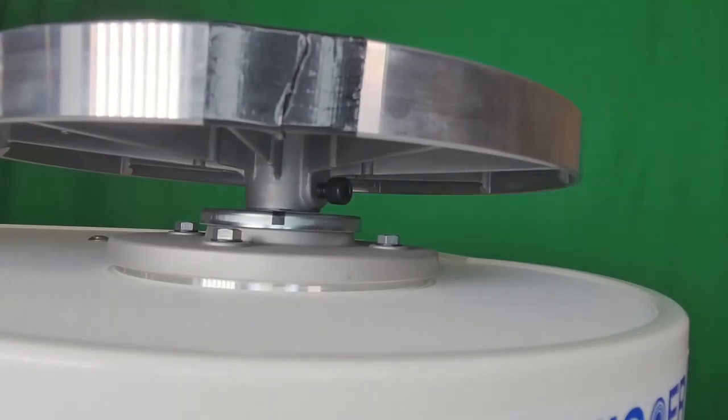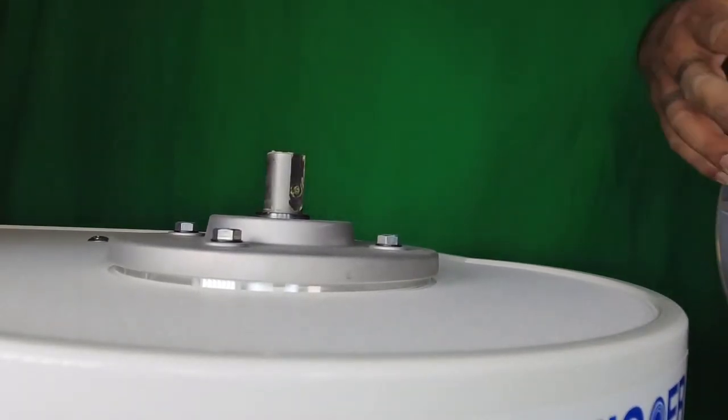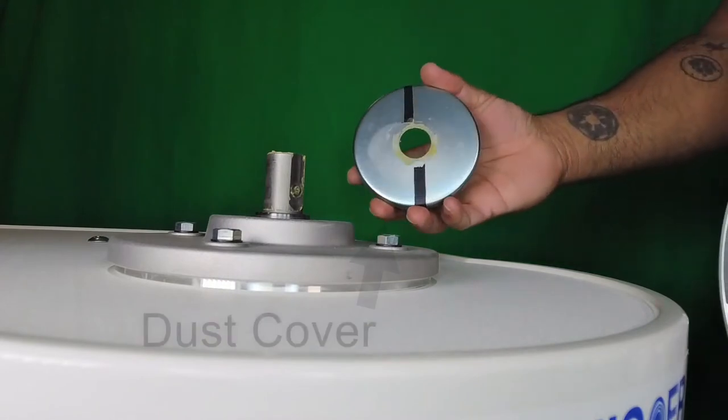then lift up evenly on the wheel head to remove it. In this case, the dust cover came off with the wheel head. Place the dust cover back onto the bearing holder.